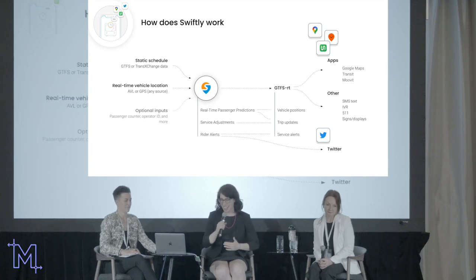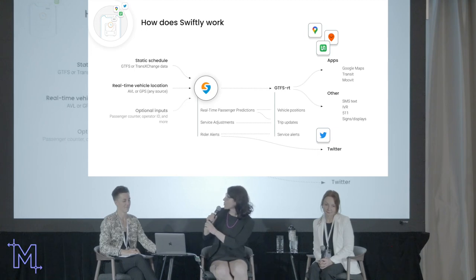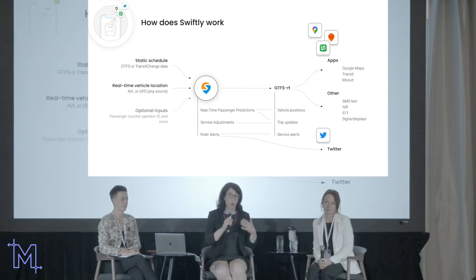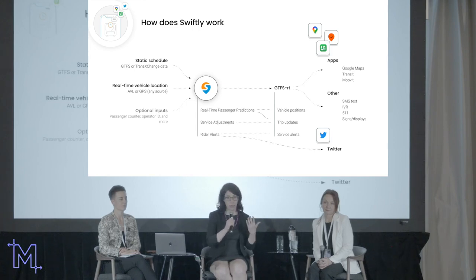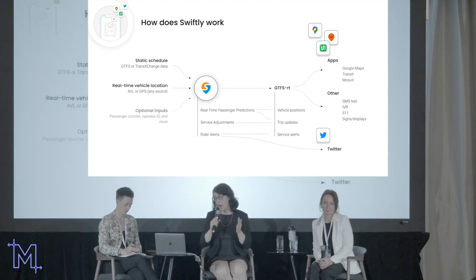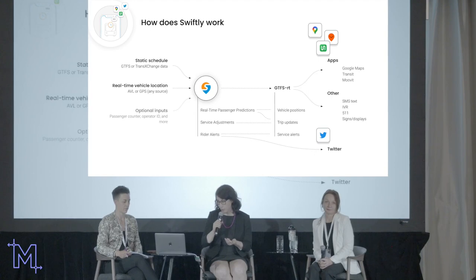How does Swiftly work? All you really need is a static schedule and real-time vehicle location data. With those two inputs, that's enough to provide real-time information and collect historical data. We also have the ability to take in additional inputs such as passenger counters. We can provide real-time passenger predictions, service adjustments to cancel trips in real-time, and rider alerts — all updated into the GTFS-RT. That information can flow out to Transit App, Google Maps, MoveIt, and other endpoints, as well as SMS, IVR, and Twitter.